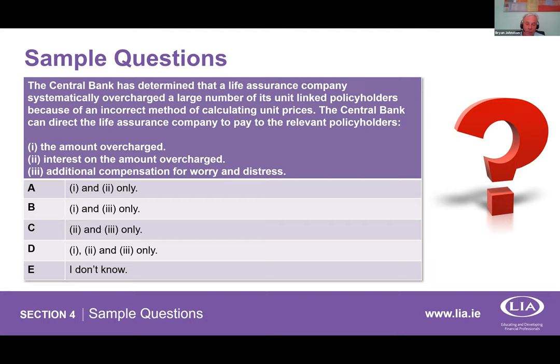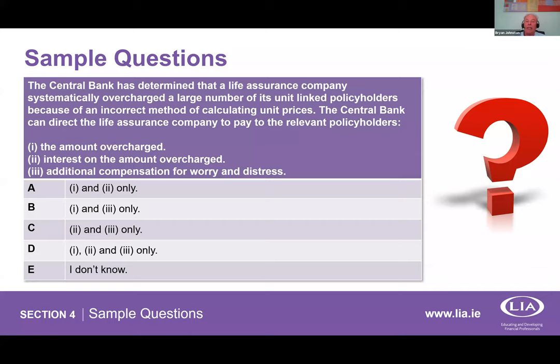For Roman numeral questions — 'is it I, II, or I and II and III?' — take your time. If you know that option I must be in the answer, you can eliminate any answer that doesn't include it. Similarly, if you know option III is definitely wrong — for example, you know the Central Bank cannot direct compensation for worry and distress — you can eliminate all answers containing III.